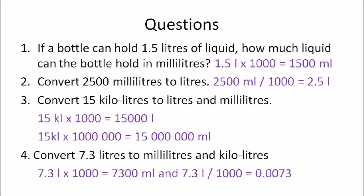For question one, you need to convert liters to milliliters. So 1.5 liters multiplied by 1000 gives you 1500 milliliters. For question two, you need to convert milliliters to liters, so you divide. 2500 milliliters divided by 1000 gives you 2.5 liters.